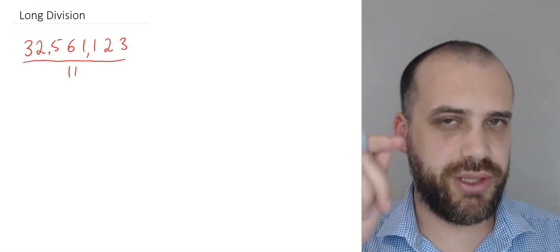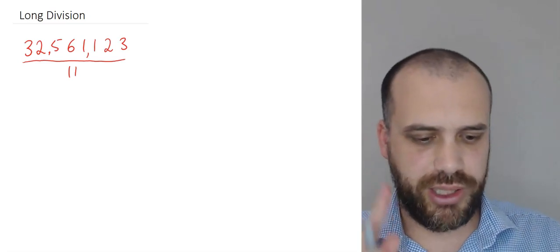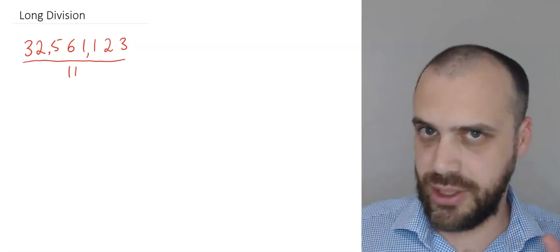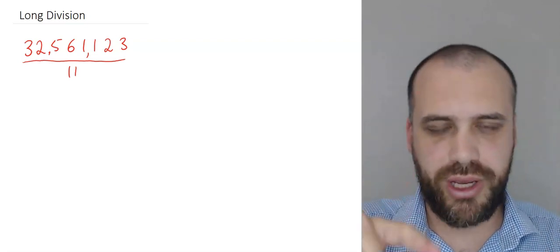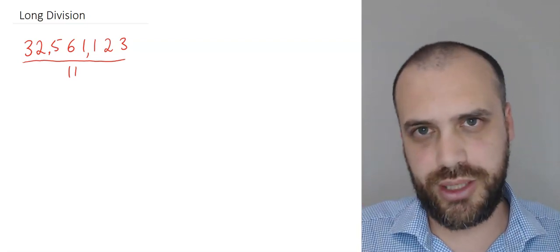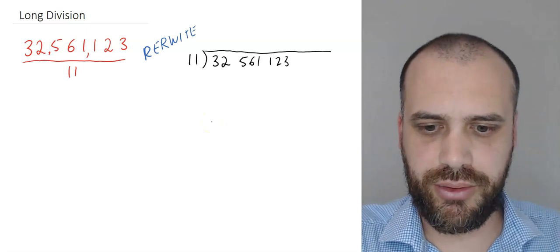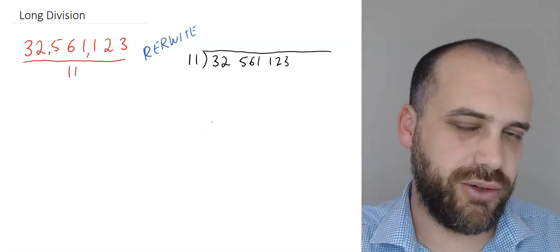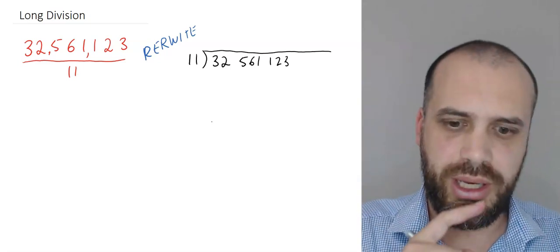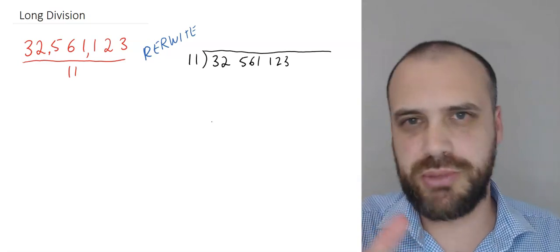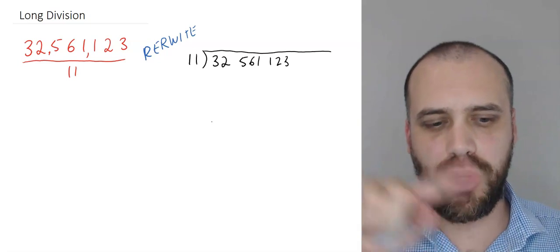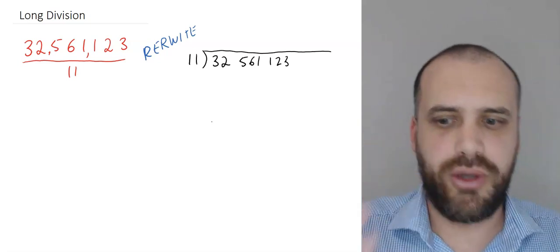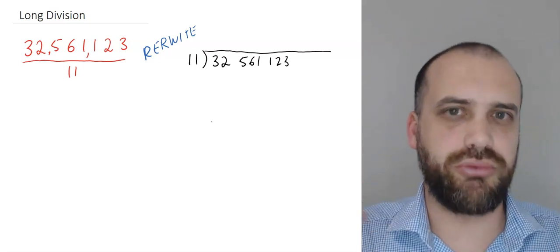So it's 32,561,123 divided by 11. Now that's a big thing, and we're going to do it by rewriting it in a special kind of way. So I've rewritten it, 32,561,123 divided by 11. That's my first step. Now I could prove my point here with smaller numbers, but I really want you to watch and see the rhythm of long division. Long division has a real rhythm to it.